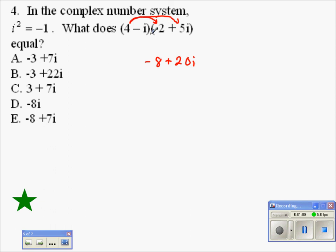We've done first outside. Let's do inside now. Negative i times negative 2. That's positive 2i. And last, negative i times positive 5i is negative 5i times i would be i squared.